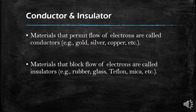First of all, a conductor is a material that permits the flow of electrons. Materials which allow this flow are called conductors. Examples of conductors are gold, silver, and copper. These materials have a strong flow of electrons and are therefore called conductors.